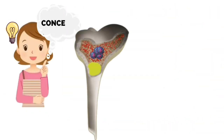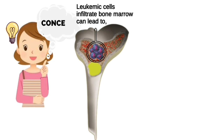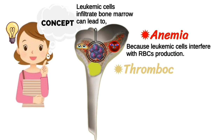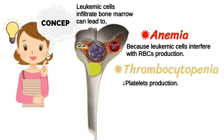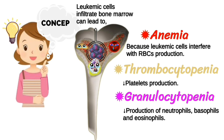Here is an important concept. In the bone marrow, leukemic cells infiltrate, which can lead to anemia because of leukemic cell interference with red blood cell production, thrombocytopenia because of decreased production of platelets, and granulocytopenia because of decreased production of neutrophils, basophils, and eosinophils.